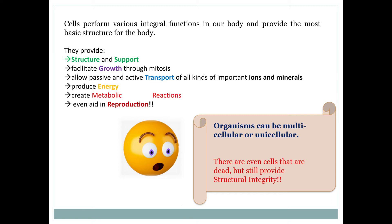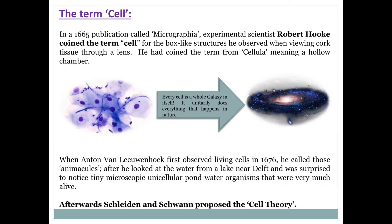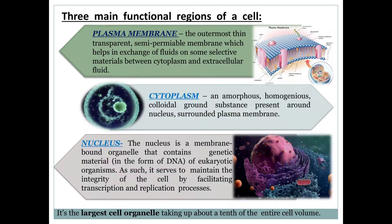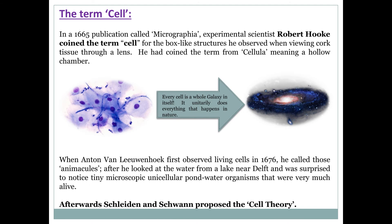To know about the cell, first we should know the origin of the term. The famous scientist Robert Hooke coined the term for the box-like structure he observed when he was viewing cork tissue through a lens. He coined the term 'cell' from 'cellular,' which means a hollow chamber.